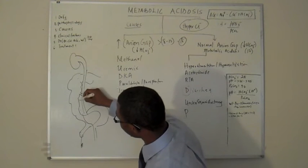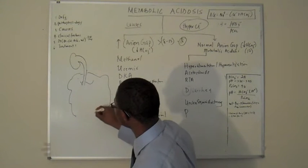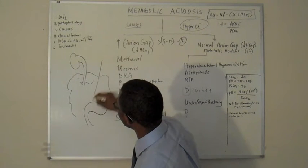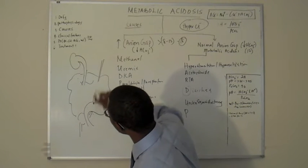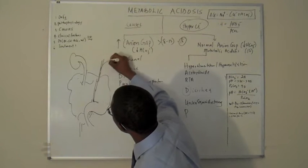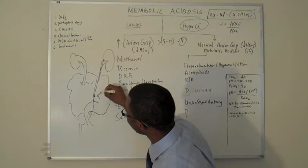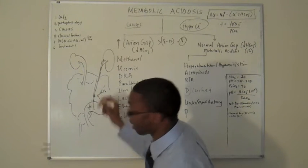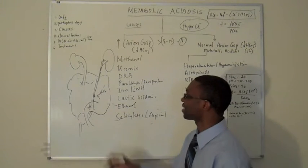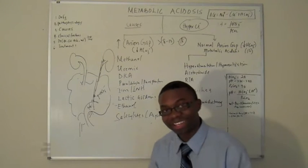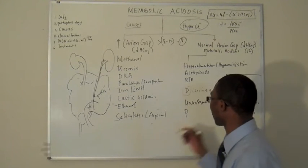So here's your sigmoid colon and the ureter is coming down to your bladder. If there's a fistula between this ureter and the colon, the colon is going to secrete bicarb into your ureter and the ureter is going to give it chloride back — it's kind of an exchange. So the colon starts dumping the bicarb straight into your urine, so you pee bicarb out. We call it ureterosigmoidostomy.